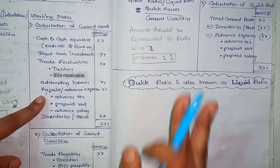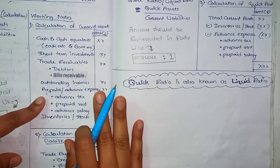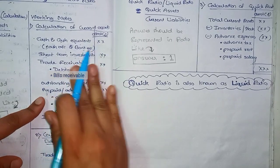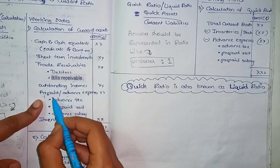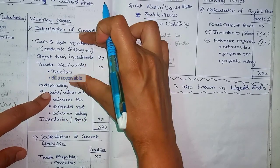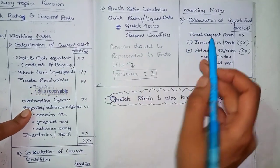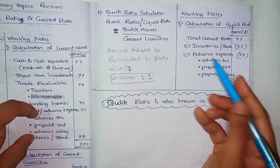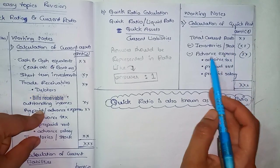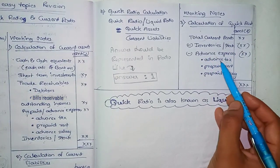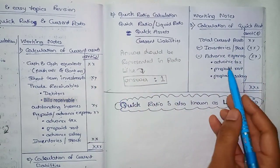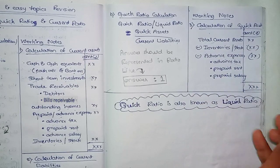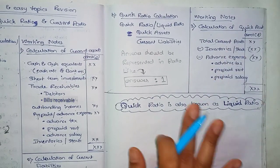Prepaid expenses are payments made in advance and cannot be converted back into cash, so they are excluded from quick assets. To find quick assets: take total current assets and subtract inventory (stock) and prepaid or advance expenses — including advance tax. Whatever prepaid expenses are given, subtract them, and you get the quick asset.